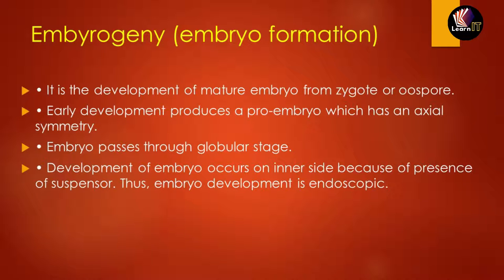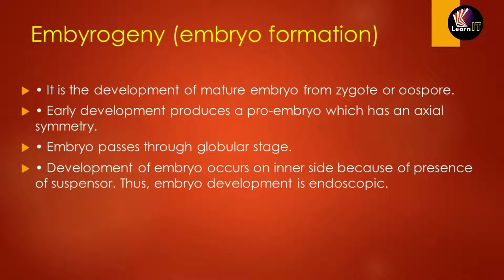In the earlier stages of development, when the embryo is first produced, it is called a pro-embryo. It will show axial symmetry because it has been divided into two parts at the start. The second cell will be called the embryo cell. As this kind of embryo develops, it shows certain globular stages.